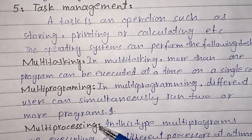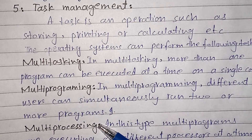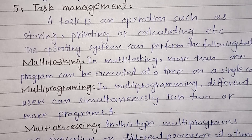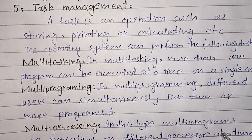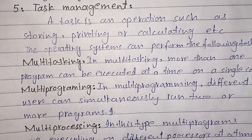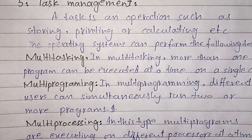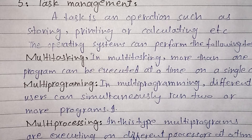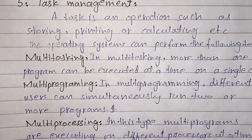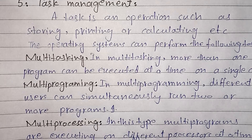In multiprocessing, different processors are used for one job, and multiple programs are executed on different processors at the same time. There are also some other types of task management which are explained in your book so that you can understand them very well.